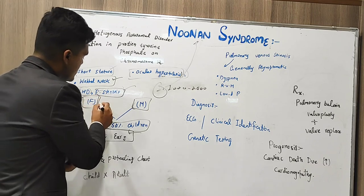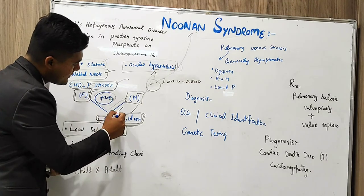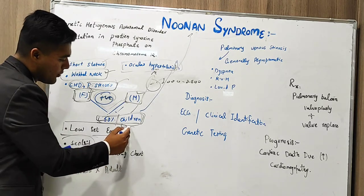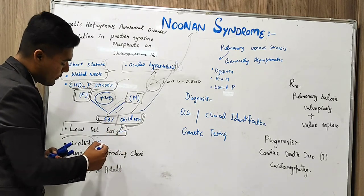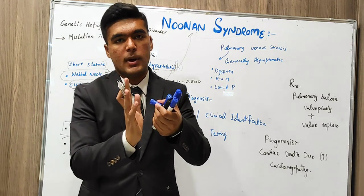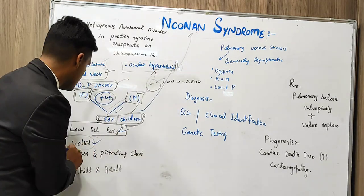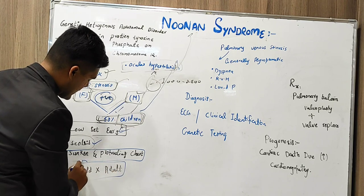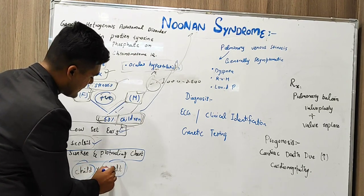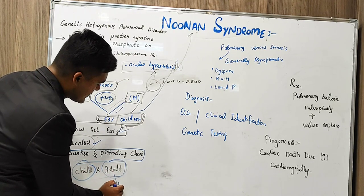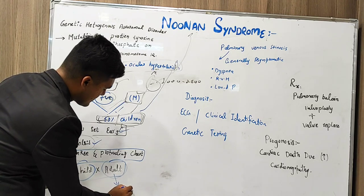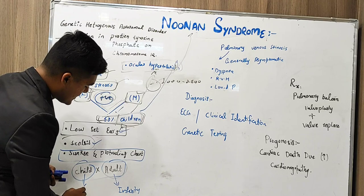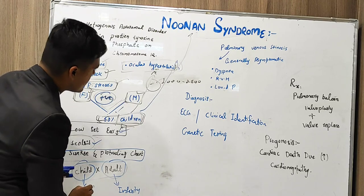When we talk about family history, if parents are positive, there is a 50% chance of development of Noonan syndrome in children. Scoliosis — meaning a wavy spine — and sunken or protruding chest are also features. In the case of adults, there are infertility chances, and in the case of children, speech disturbances are seen as well.